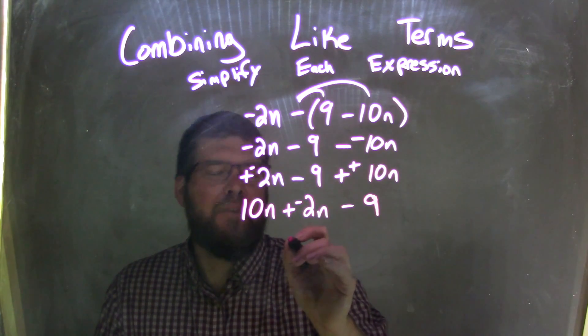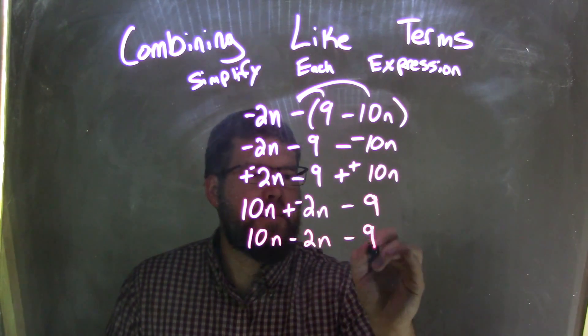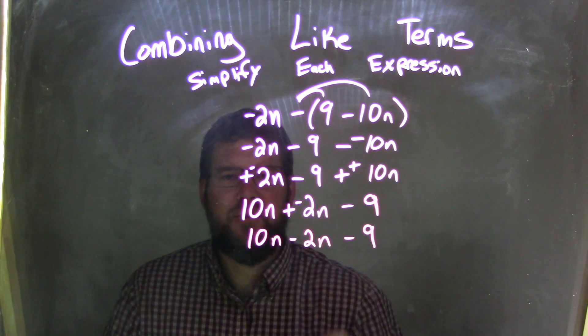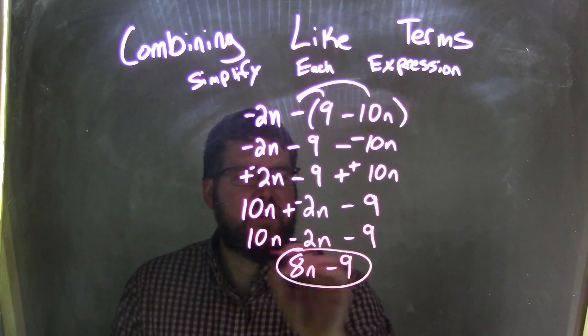I can rewrite that plus and negative to be subtraction, so we have 10n minus 2n minus 9. Now 10n minus 2n is just 8n minus 9, and that is our final answer.